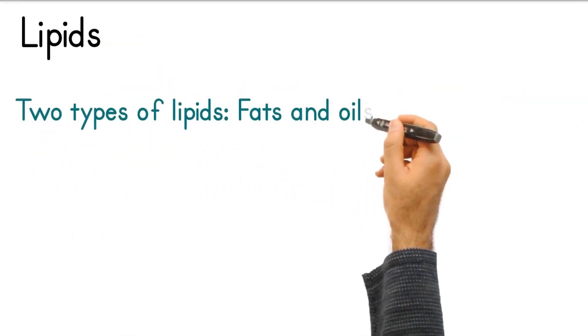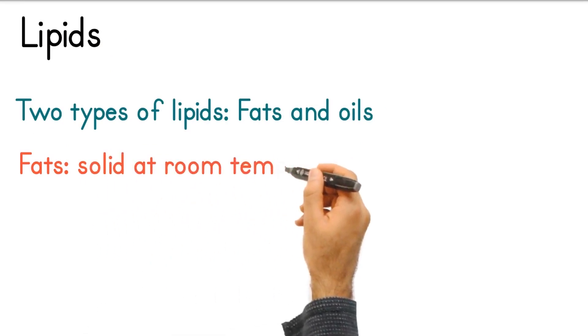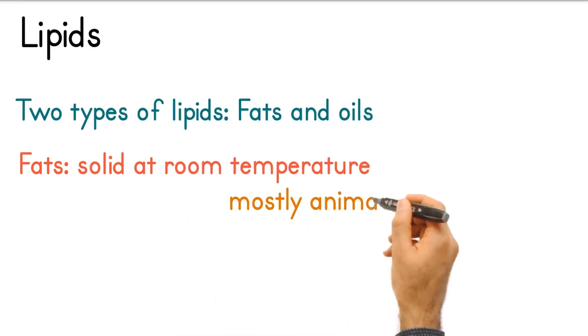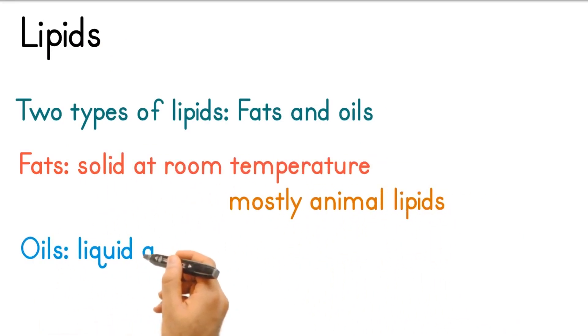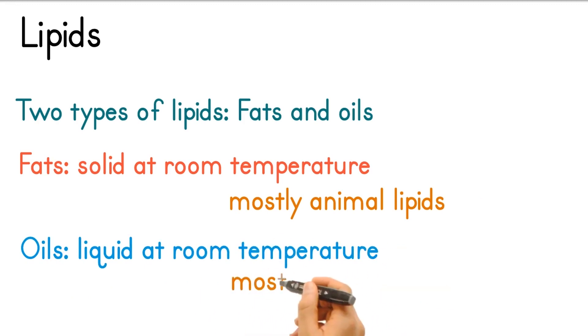There are two types of lipids: fats and oils. Fats are solid at room temperature. These are mostly animal lipids. Oils are liquid at room temperature. These are mostly plant lipids.